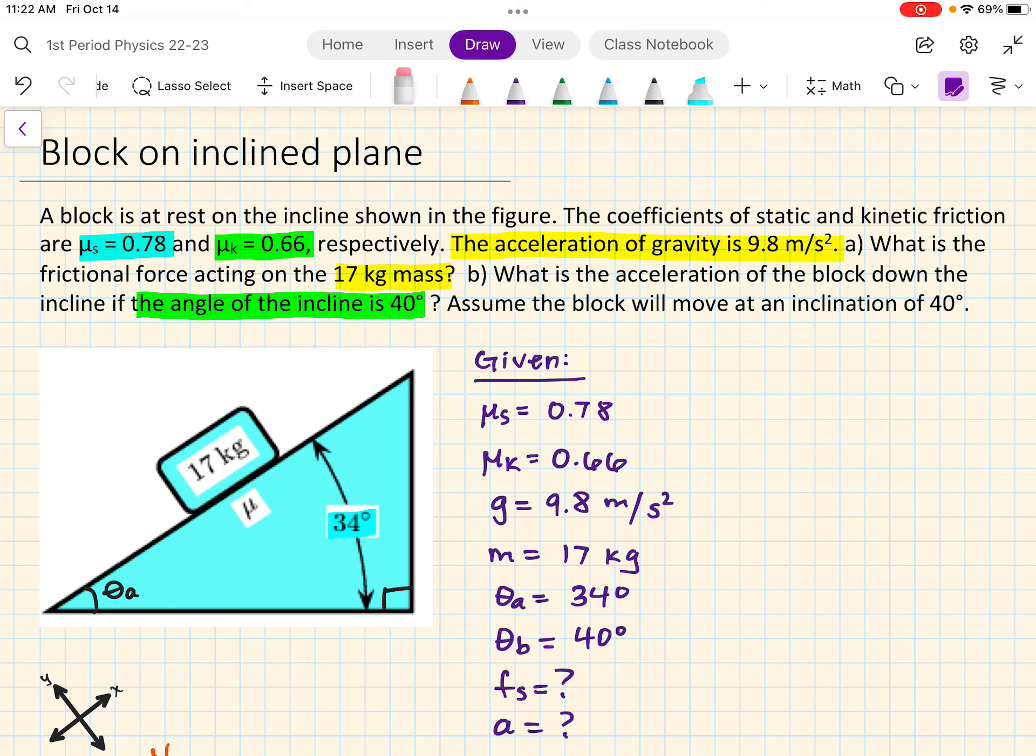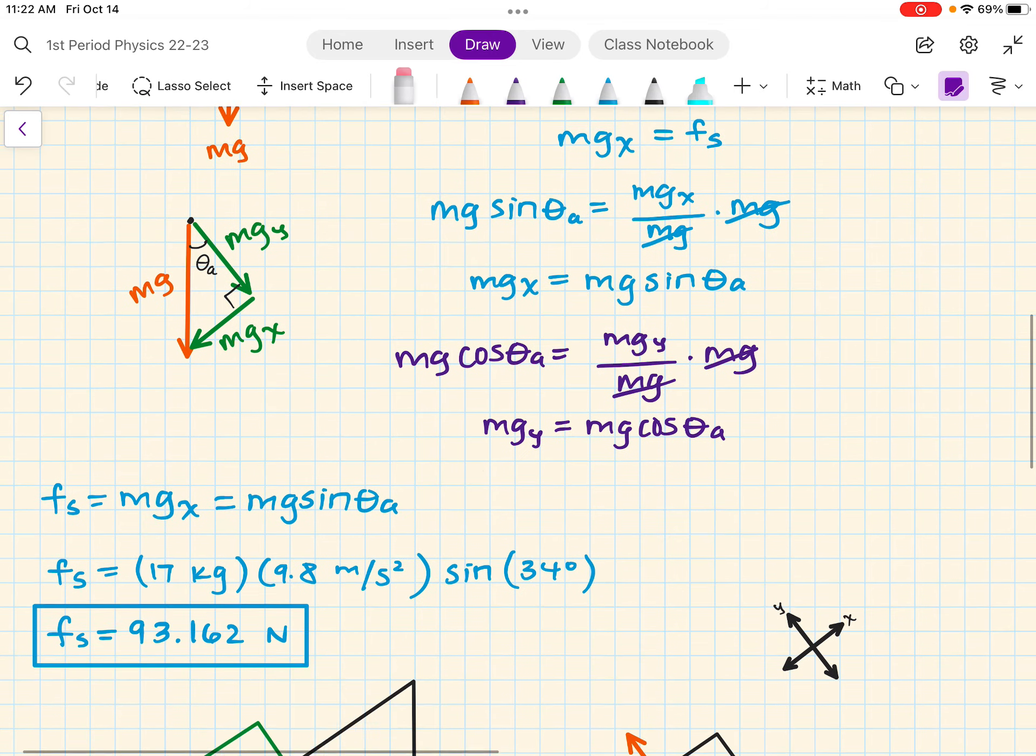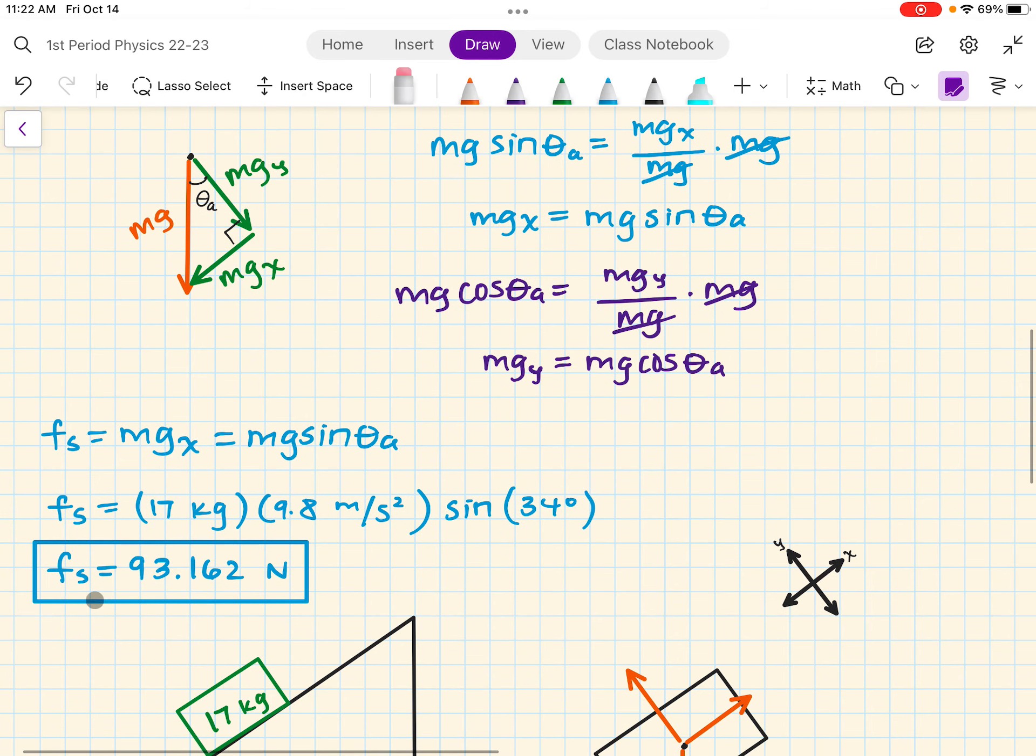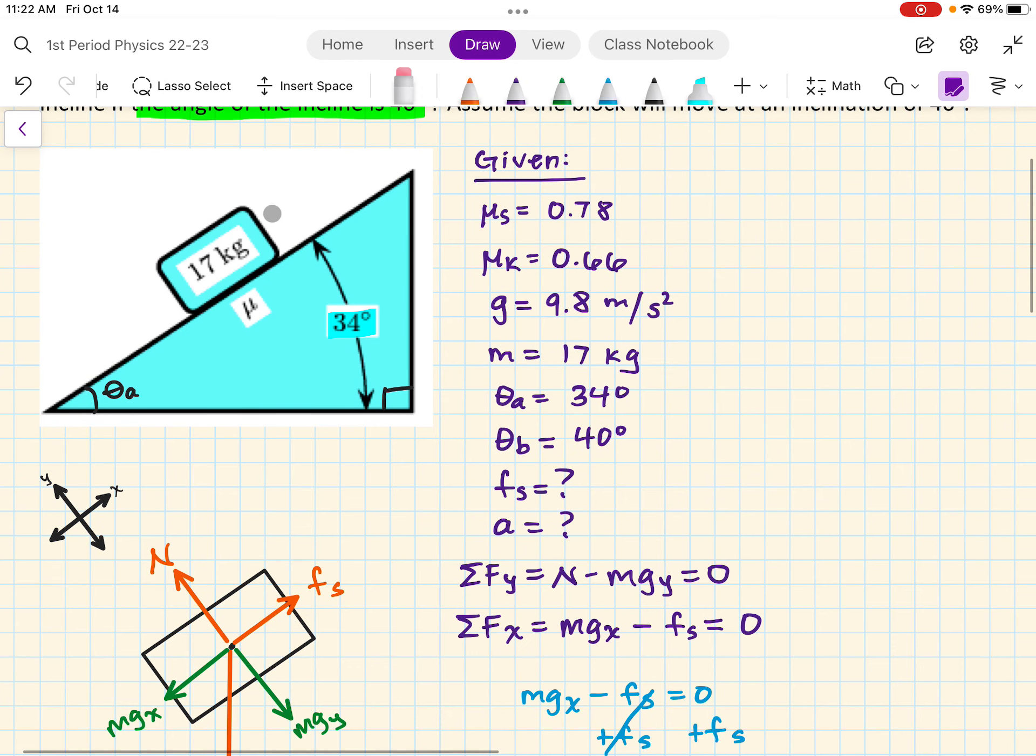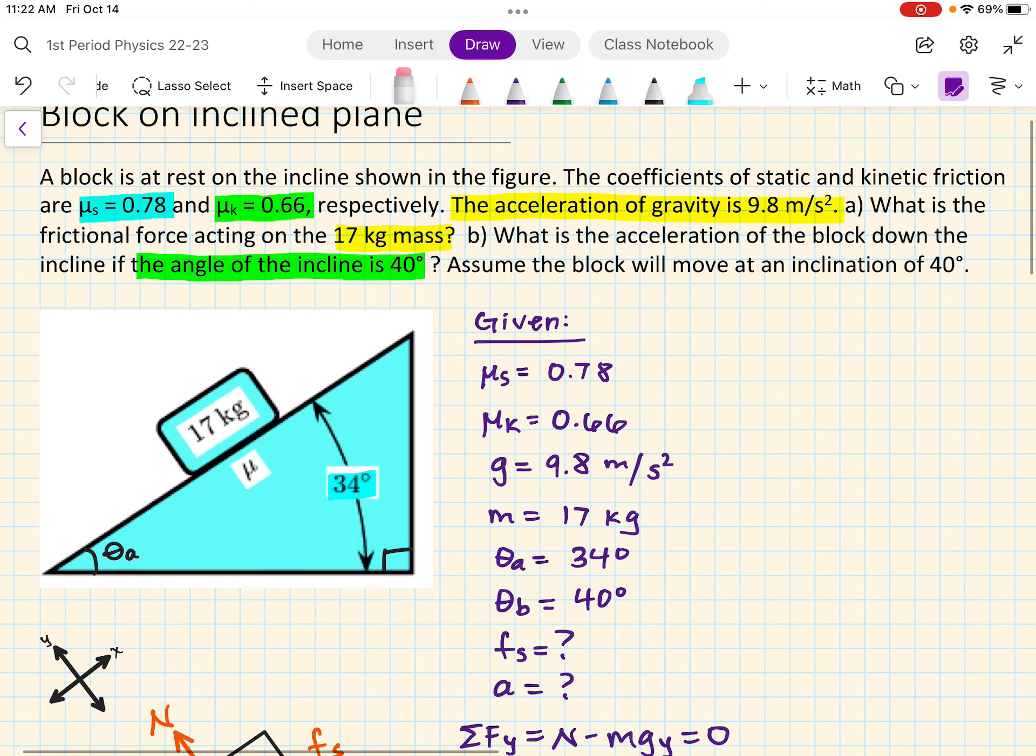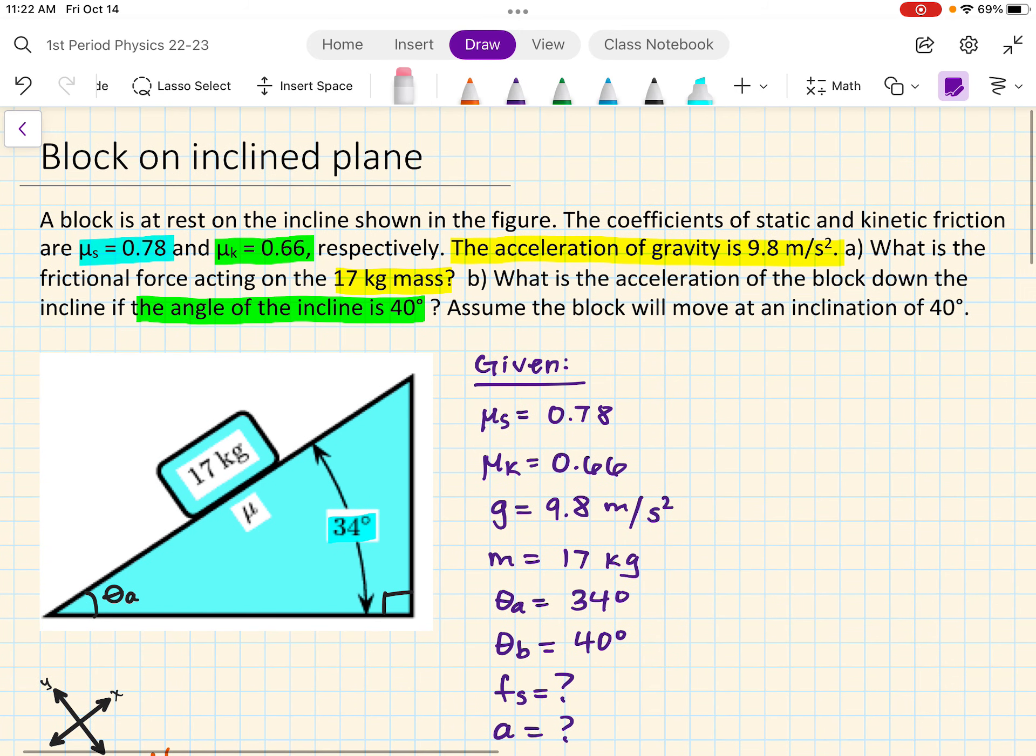Hello again. This is part two for the example on the block and incline plane. In the previous video, we found the friction force, static friction, which is holding this block from sliding down the incline. And now we have to answer question B, which says: what is the acceleration of the block down the incline if the incline is 40 degrees? We know now it's going to move.